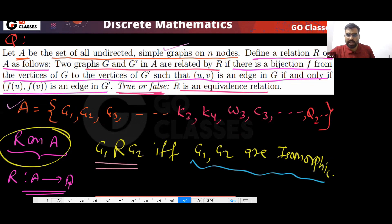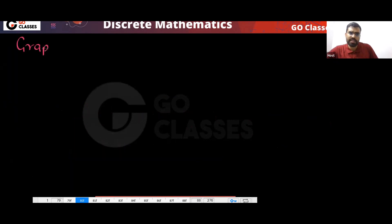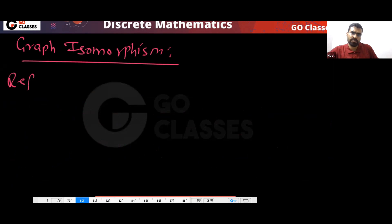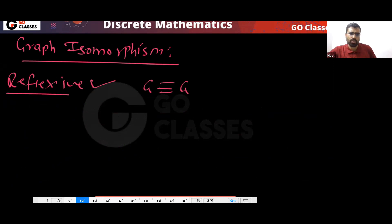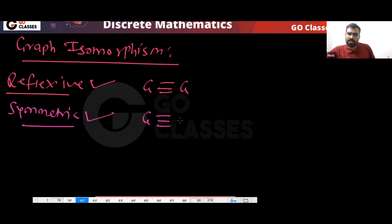So finally — graph isomorphism. Can I say this is reflexive? Yes, this is reflexive, because every graph is isomorphic to itself. Can I say this is symmetric? Yes, this is symmetric: if G is isomorphic to H, then H is isomorphic to G.